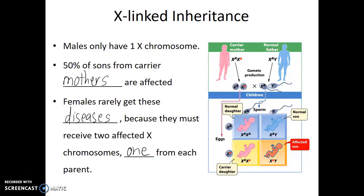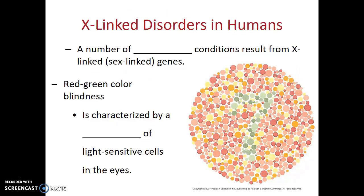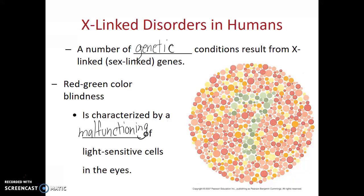Now what are some human diseases or disorders that are sex-linked? Well, one is red-green colorblindness. There are a number of genetic conditions which result from sex-linked or X-linked genes. Red-green colorblindness is one of them. It is categorized by a malfunctioning of the light-sensitive cells in the eyes. Personally, I've known many individuals who have had red-green colorblindness, and the vast majority of them have been male. I've only met one female who was red-green colorblind, and it's true that her father was red-green colorblind and her maternal grandfather had also been red-green colorblind.